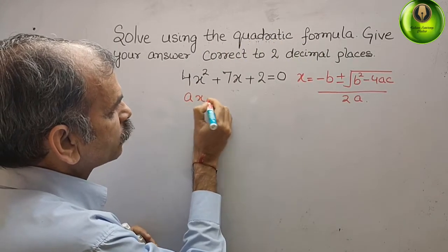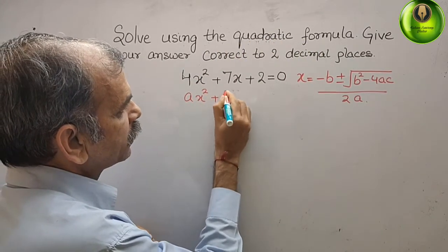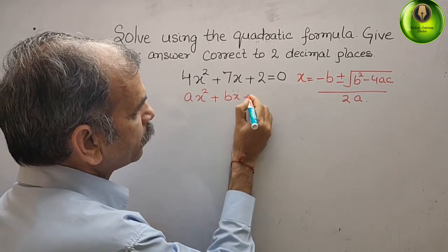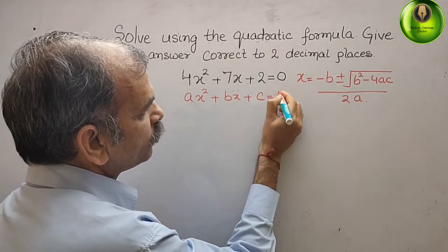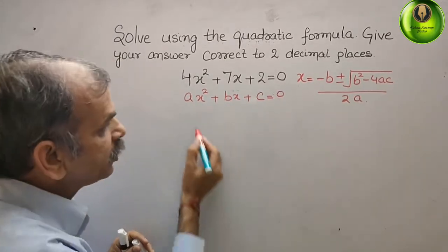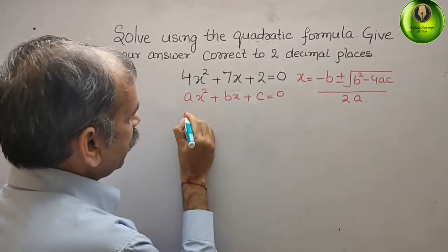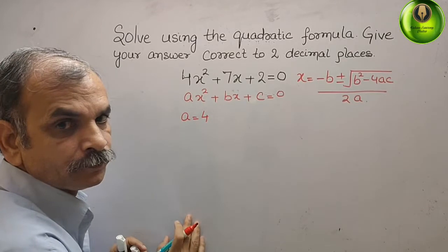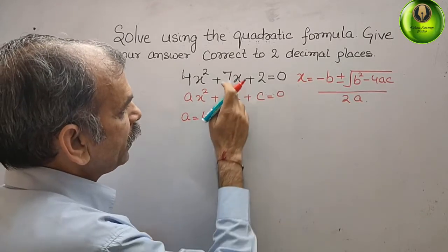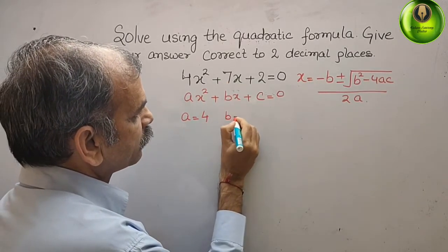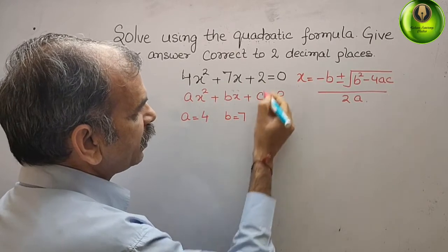ax² + bx + c = 0. That means your a is 4, a = 4, b is 7, and c is 2.